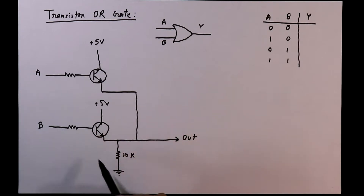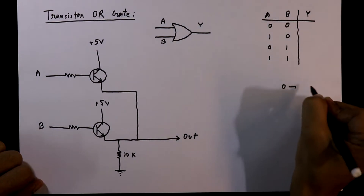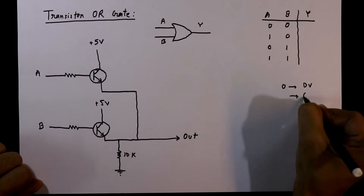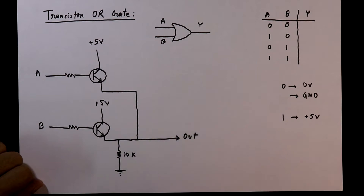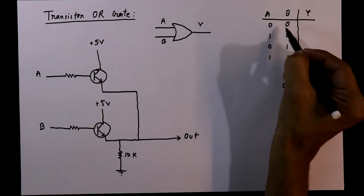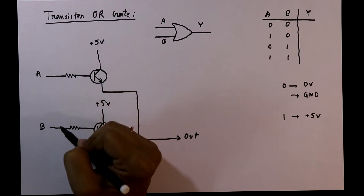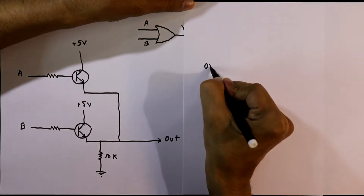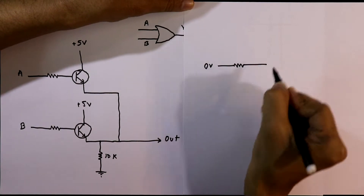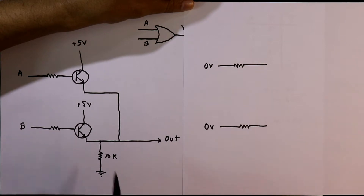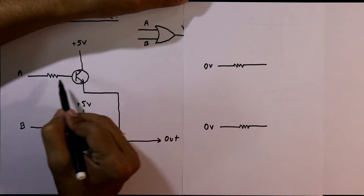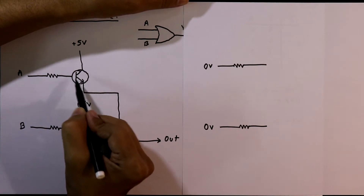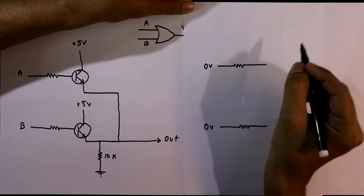Now we have to analyze this circuit and find out the output. Here 0 means 0V or ground, and 1 means the voltage level is plus 5V. For the first condition we are applying 0 to both inputs. 0 means 0V for both transistors, and when we apply 0V to the base of an NPN transistor, there will not be any current flow through the base and emitter, so the transistor is working as an open circuit.